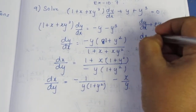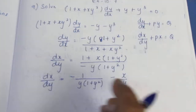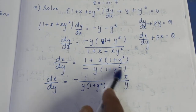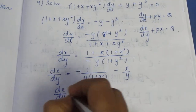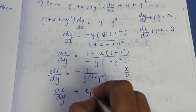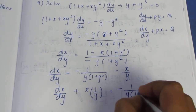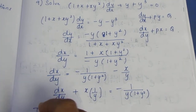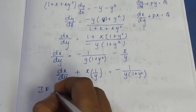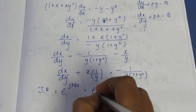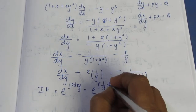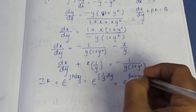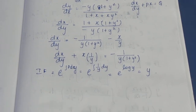So dx/dy plus Px equals Q in the format. Now for the integrating factor: e to the power of integration of P dy, which is e to the power of integration of 1 by y dy, giving log y. So the integrating factor is e to the power log y, which equals y.